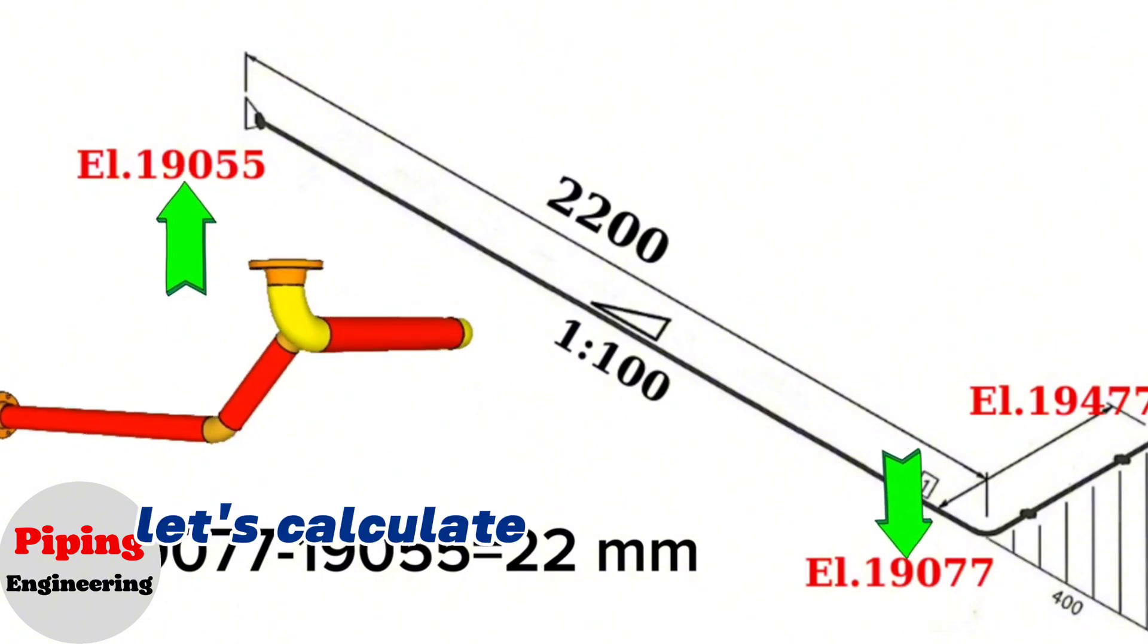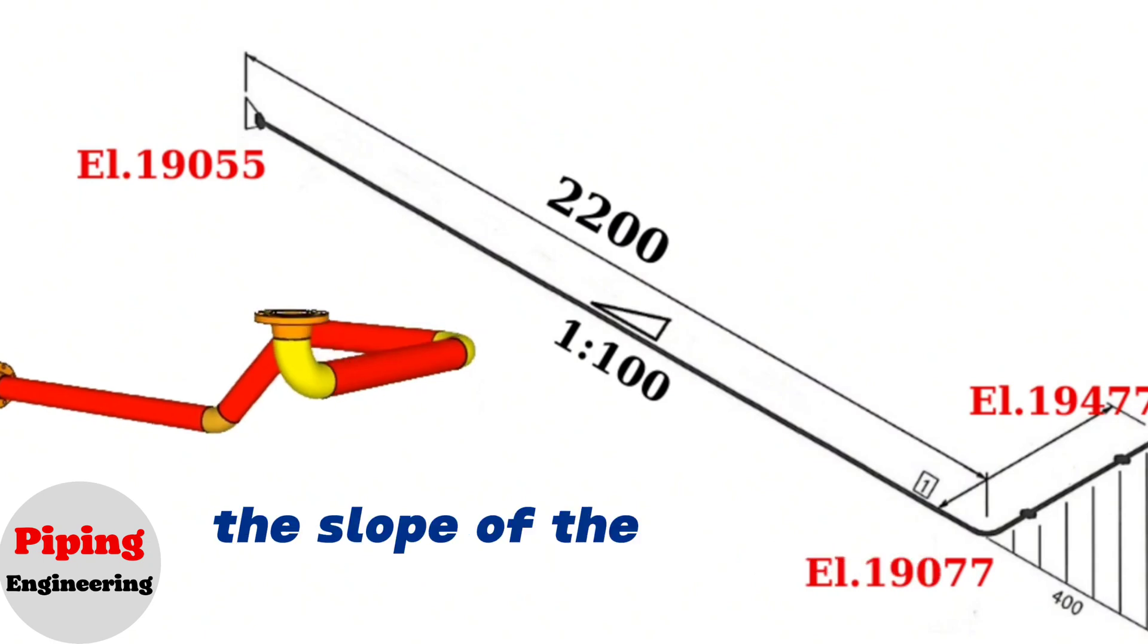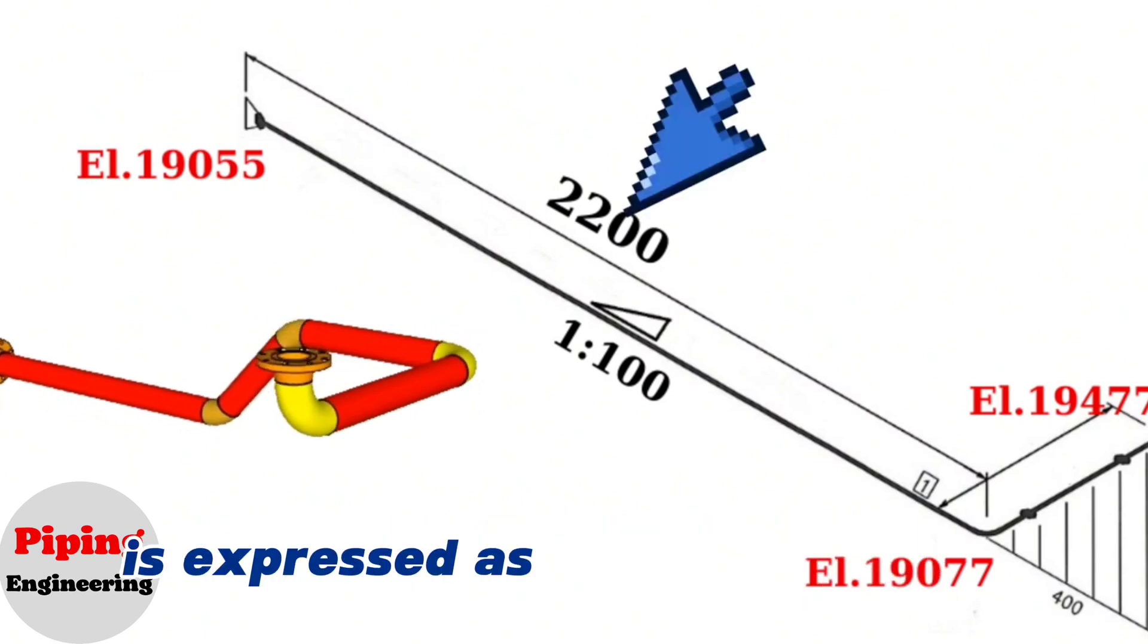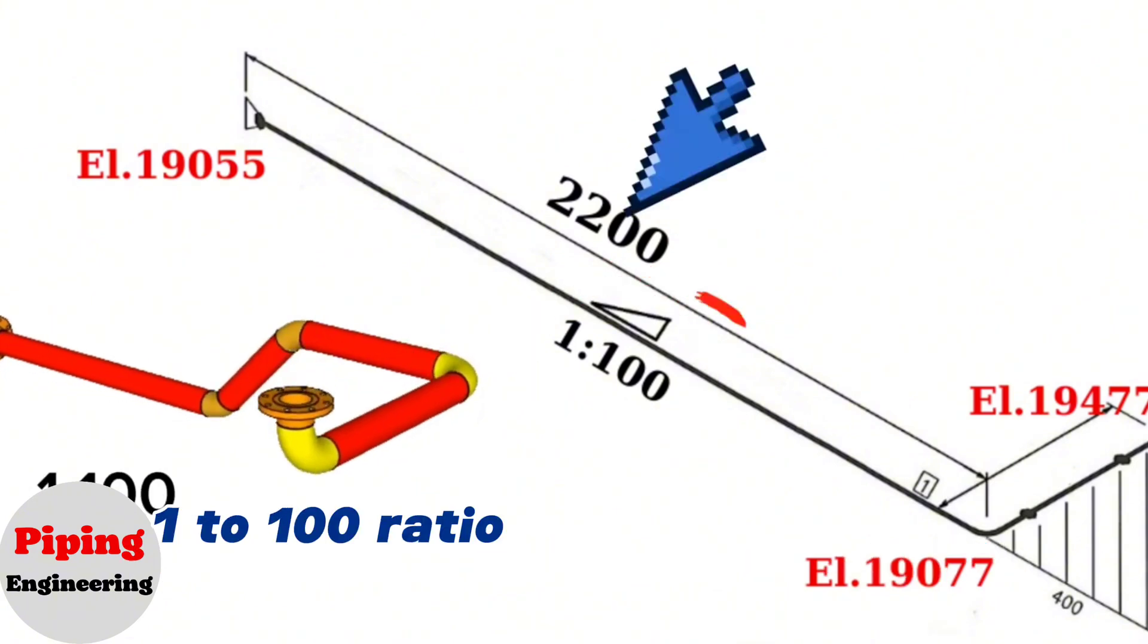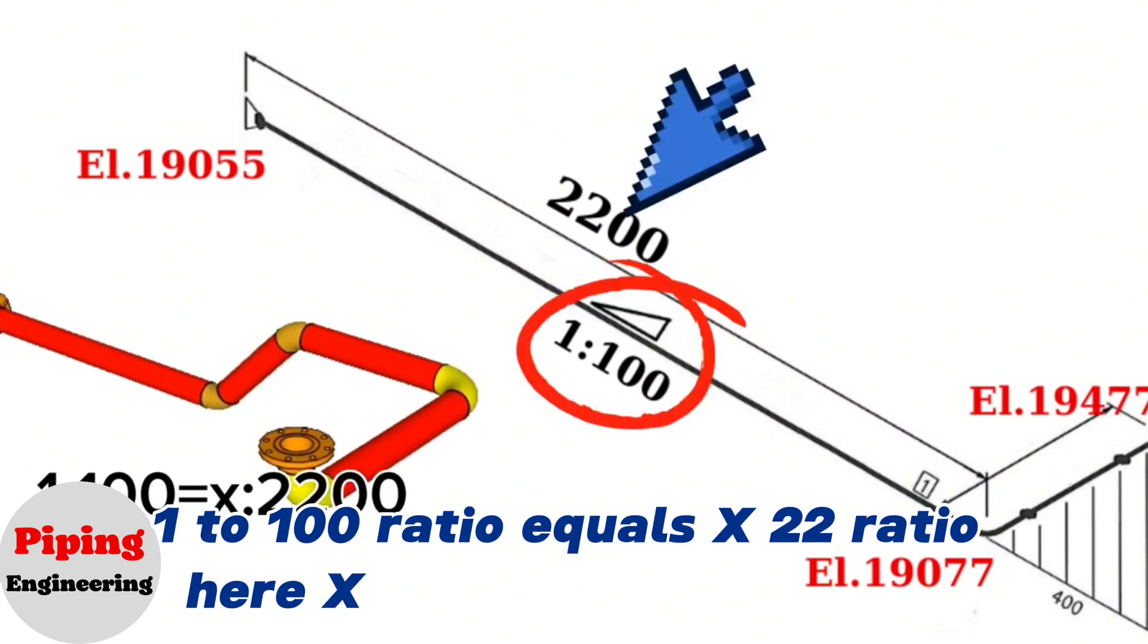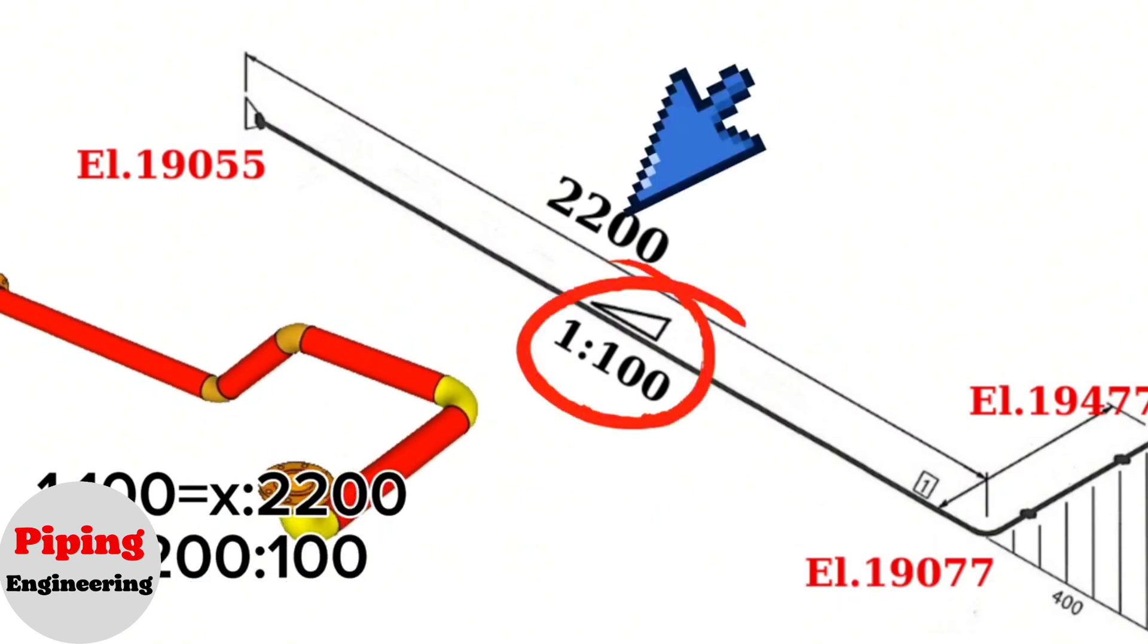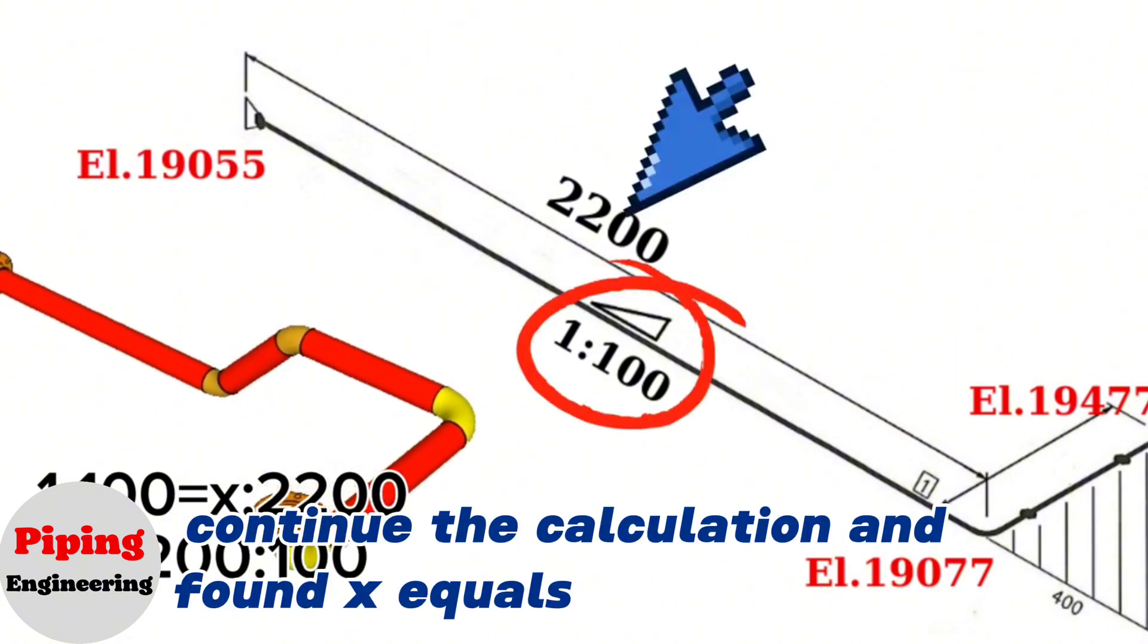Let's calculate with slope ratio now. In this pipe isometric drawing, the slope at a horizontal distance of 2200 is expressed as a ratio of 1 to 100. 1 to 100 ratio equals x to 2200 ratio. Here x equals 2200 to 100 ratio. Continue the calculation and found x equals 22 mm.